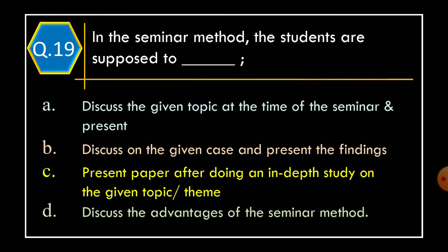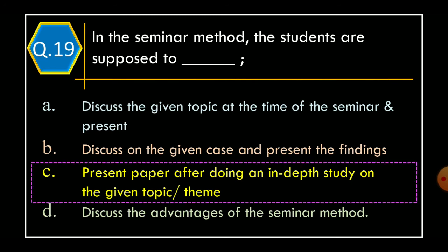Question 19: In the seminar method, students are supposed to — Option A, discuss the given topic at the time of the seminar and present; Option B, discuss on the given case and present the findings; Option C, present a paper after doing an in-depth study on the given topic or theme; Option D, discuss the advantages of the seminar method. The correct option is Option C: present a paper after doing an in-depth study on the given topic or theme.